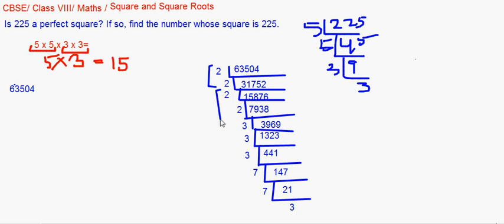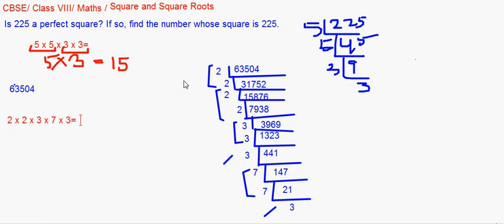Now let's pair all the factors in groups of two. We have pairs of 2s, pairs of 3s, and pairs of 7s — everything pairs up. Multiplying one from each pair: 2 × 2 × 3 × 3 × 7 × ... gives us 252. So 63504 is a perfect square of 252.